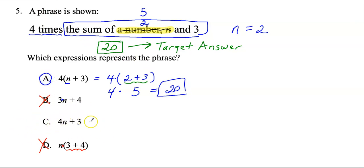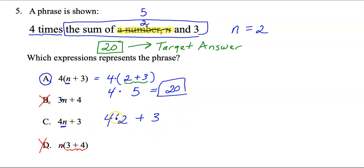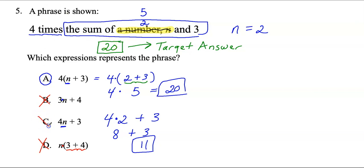Let's look at C to see why it doesn't work. I'll plug in 2 for n: 4 times n plus 3 becomes 4 times 2 plus 3. There are no parentheses here, so according to PEMDAS I do multiplication before addition — 4 times 2 is 8, then 8 plus 3 is 11. That does not match up with the target answer of 20, so C is clearly not correct.